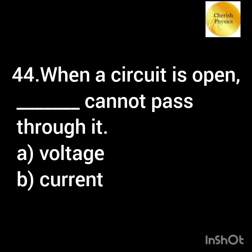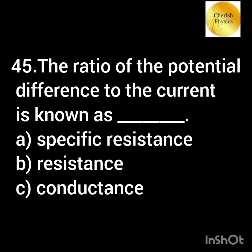When a circuit is open, dash cannot pass through it. The ratio of the potential difference to the current is known as?